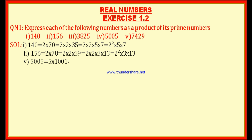Let us solve the fourth bit: 5005. Since the units digit is not even, it is not divisible by 2. Adding the digits gives 10, which is not divisible by 3. Since there is a 5 in the units place, it is divisible by 5: 5005 = 5 × 1001. Now 1001 is divisible by 7: 5 × 7 × 143. And 143 is divisible by 11: 5 × 7 × 11 × 13.